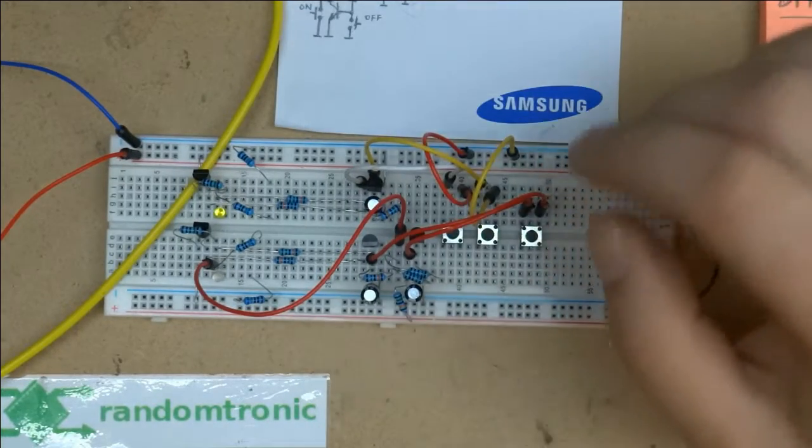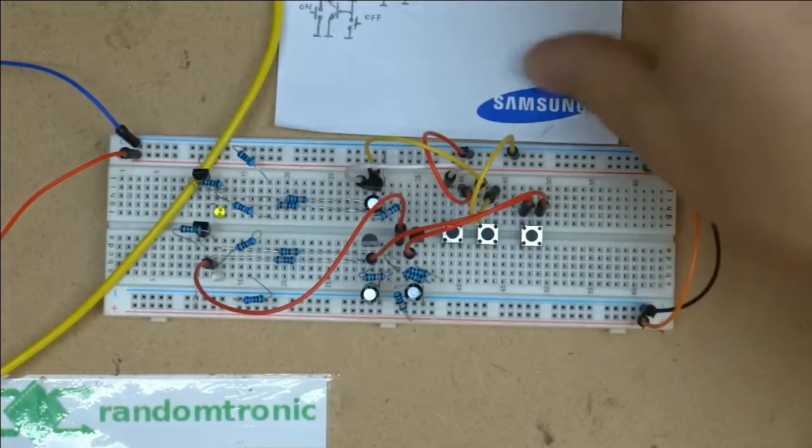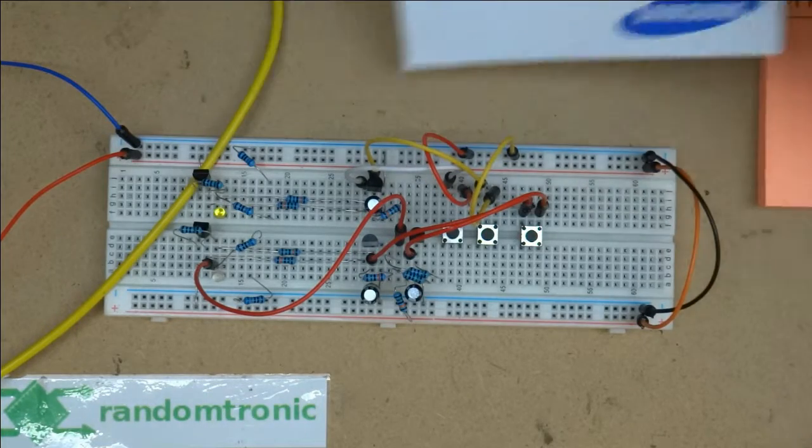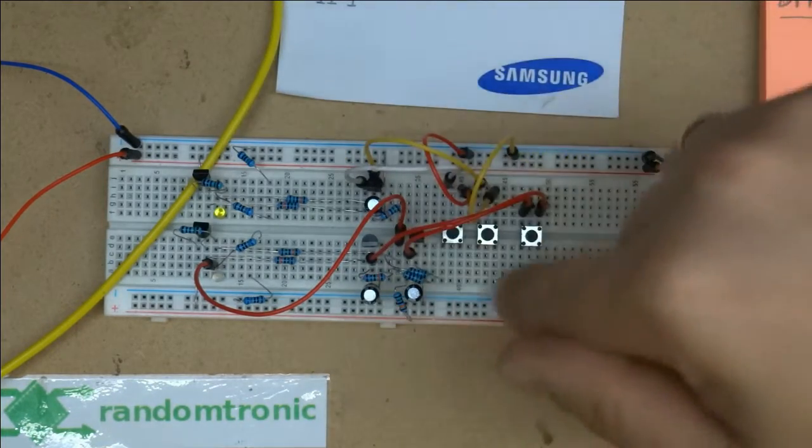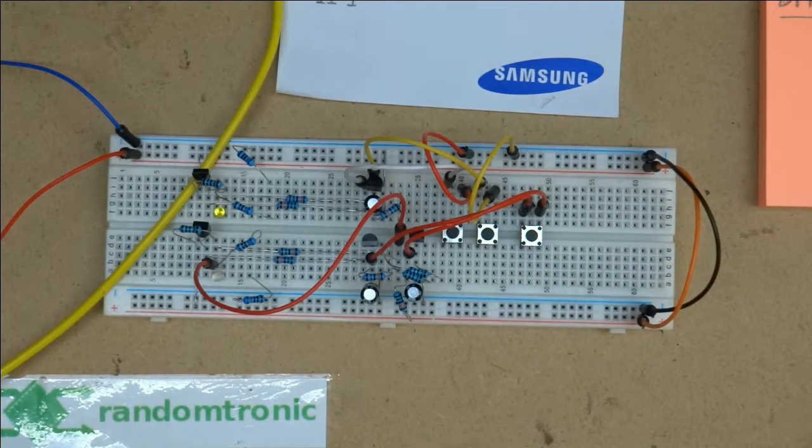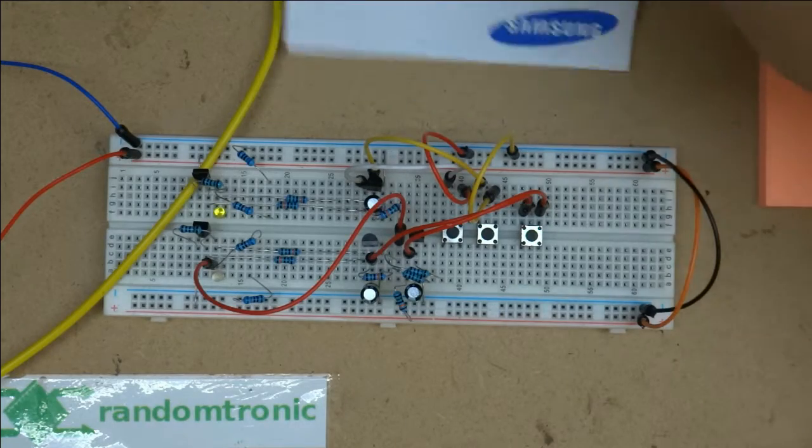On the breadboard there's basically two sections. This is the top section of the breadboard, and the bottom one is the one that works with one switch.